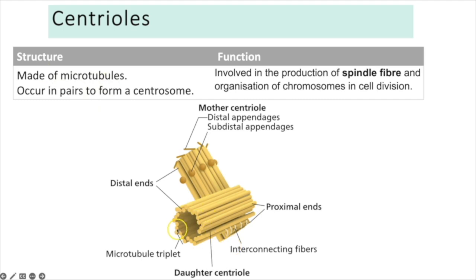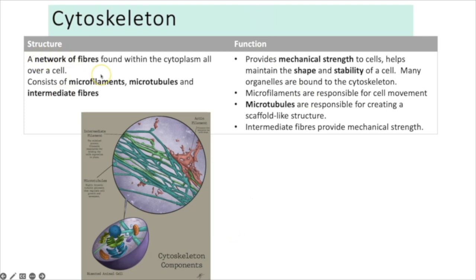Centrioles are made up of microtubules and occur in pairs to form a centrosome. They are involved in spindle fibre formation, which is essential for organising the position of chromosomes in mitosis and meiosis. The cytoskeleton is a network of fibres found within the cytoplasm throughout a cell, consisting of microfilaments, microtubules, and intermediate fibres. It provides mechanical strength, helps maintain cell shape and stability, and many organelles are bound to it to hold them in a fixed place.